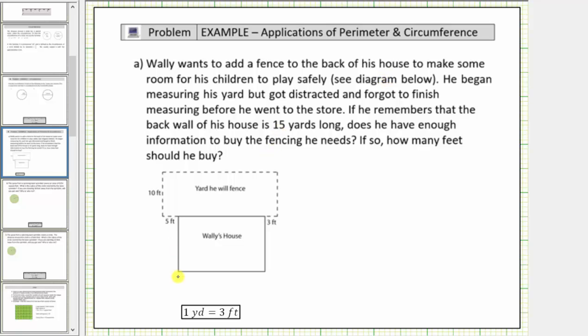Looking at the diagram below, here's Wally's house and we're given the length of the fence here is five feet, this length is ten feet, and this length is three feet.